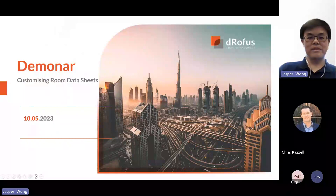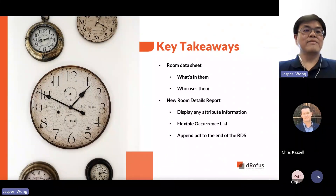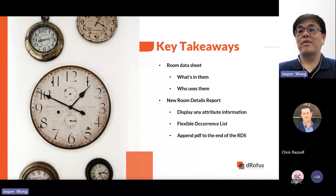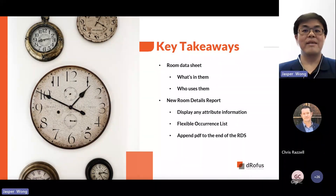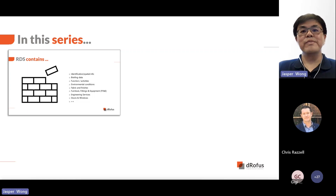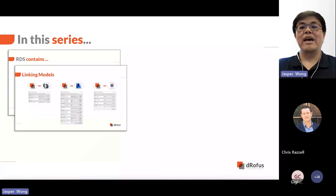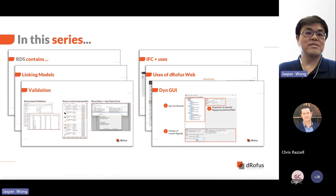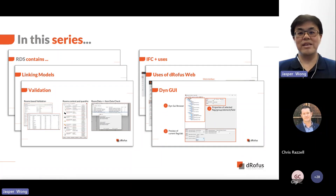Thanks, Chris. So with today's Deminar around the customizing of Room Data Sheets, the key takeaways are, firstly, to refresh ourselves with what is a Room Data Sheet, the information it contains, and who benefits from using it. Then we will take a look at the new Room Details report and demonstrate a few new features. In this Deminar series, we've been delving into the Room Data Sheet and the different functions of Dorofus that help to aggregate and manage data from different stakeholder sources. The topics we've looked at range from getting information into Dorofus to setting up the fields using DIM GUI to collect information.